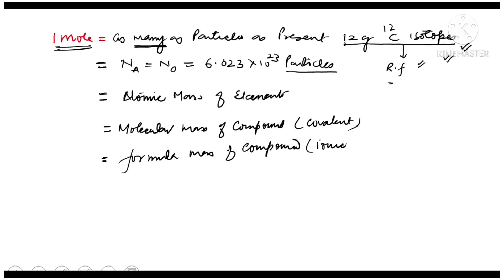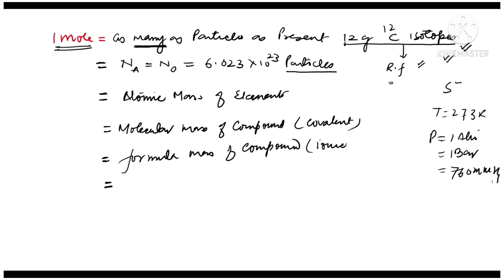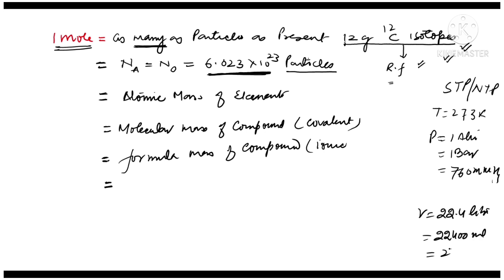Now how is the mole related to molar volume? Let's look at Avogadro's law — Avogadro's hypothesis. At standard temperature and pressure (STP), temperature is 273 K and pressure is either 1 atm, 1 bar, or 760 mmHg. At STP, equal volumes of all gases contain the same number of particles. This number of particles is Avogadro's number, and this volume is known as molar volume, which is equal to 22.4 liters, or 22,400 mL, or 22,400 cm³.